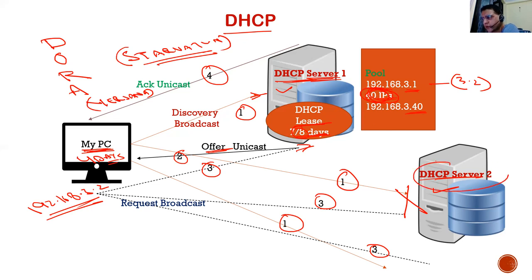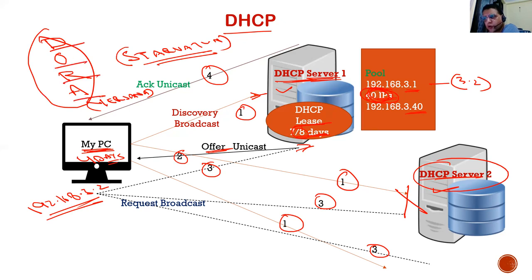Another attack is a Rogue Server attack. After exhausting the legitimate pool, my PC might go to a second server — and what if that server is a rogue server launched by an attacker pretending to be a legitimate server in the network? These are the two possible attacks. The overall process is called the DORA process: DHCP Discovery, Offer, Request, Acknowledgement — Broadcast, Unicast, Broadcast, Unicast. I hope it's clear. If you have any doubts or comments, do let me know. Thank you.